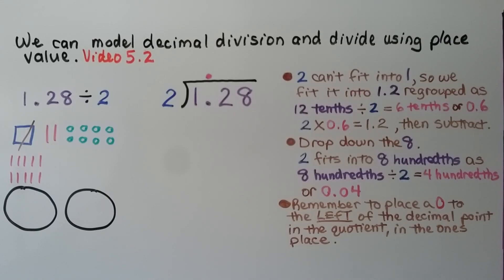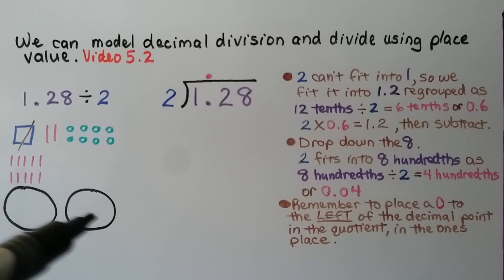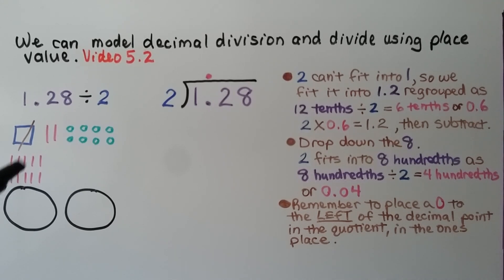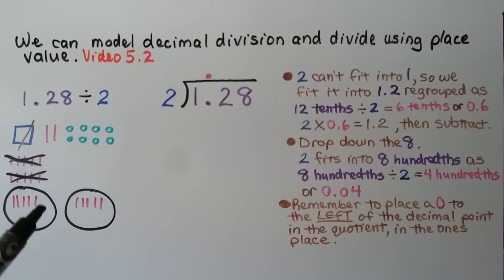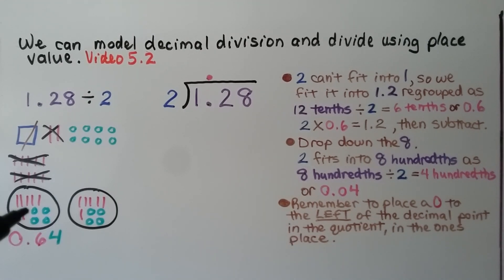We can also model decimal division and divide using place value, as learned in video 5.2. We have 1 and 28 hundredths divided by 2. We model 1 whole with a square, 2 lines as 2 tenths, and 8 little circles as 8 hundredths. We regroup the 1 whole as 10 tenths and put them into 2 groups, taking turns, so they go in as equal groups. We erase them as we put them in so we know they're used. We have 5 in each group, then evenly divide the 8 hundredths between the 2 groups — giving us 6 tenths and 4 hundredths, which is 64 hundredths, in each group.